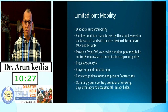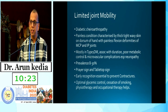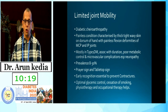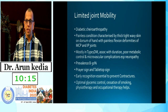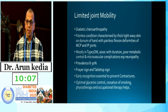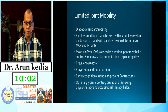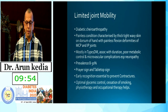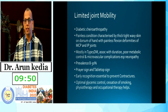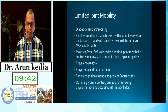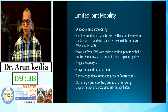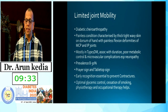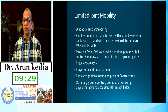The next condition is limited joint mobility of the hands, also called diabetic chiroarthropathy — a painless condition characterized by thick, rigid, tight, waxy skin of the dorsum of the hands with painless flexion deformity of the fingers. It is mostly seen in type 1 diabetes patients with long duration and poor metabolic control, and is associated with ongoing microvascular complications, especially neuropathy. Prevalence in type 1 diabetes can be 8–30%. It is recognized by the prayer sign and tabletop sign. Early recognition is important to prevent contractures, and management includes optimal glycemic control, cessation of smoking, physiotherapy, and occupational therapy.